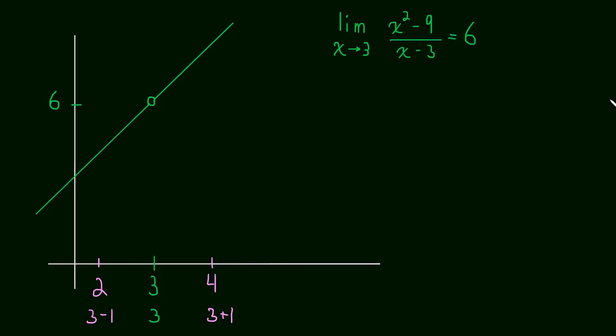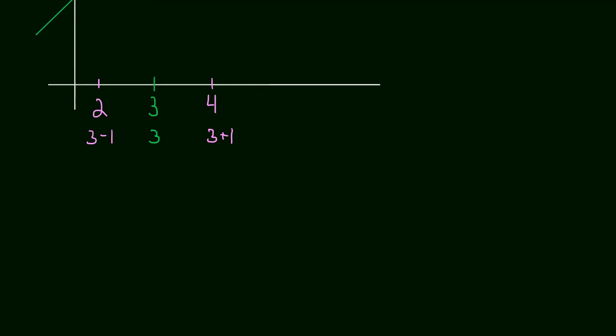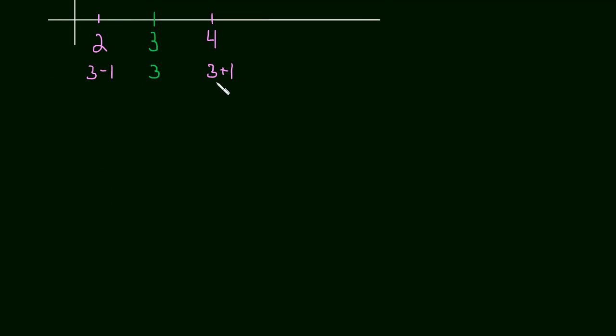So we want x to be in this interval. How could we force x to be between 2 and 4? Well, we just write it just like I said. This is something you've been doing for a while now. If we want x to be between 2 and 4, we say it's greater than 2. So x is greater than 2 and it's less than 4. That forces it to be in that interval, right?